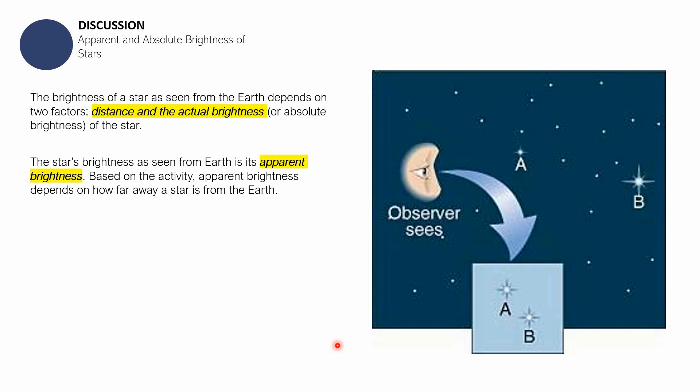That is called apparent brightness. It is a star's brightness as it is seen from the planet. Based from just observing the sky, you will see the apparent brightness that is depending on how far away a star is from the earth. In this illustration, your eyes can see these stars as equally bright in the sky.